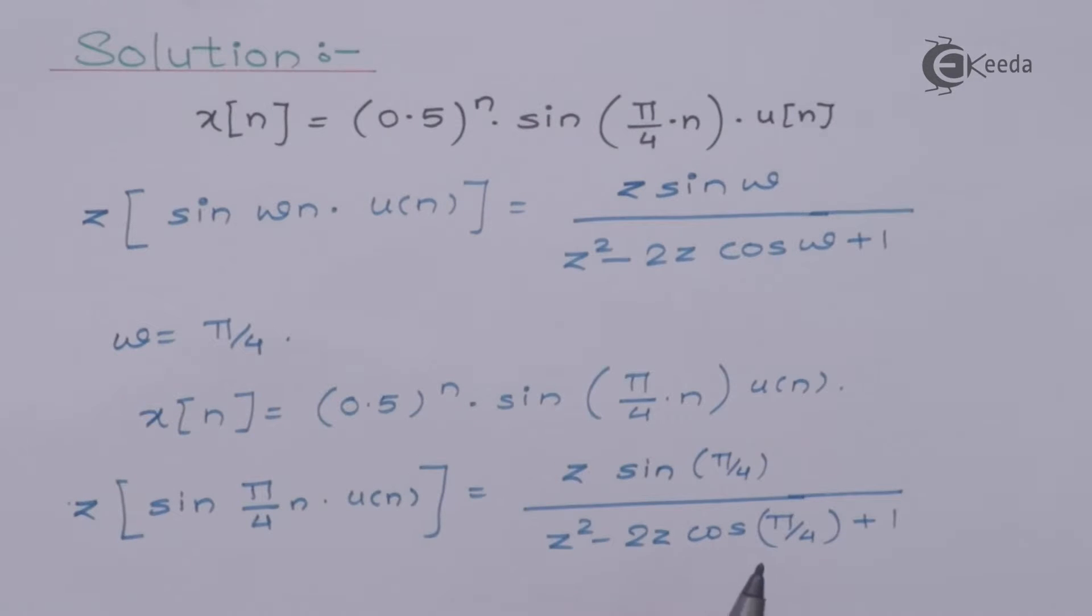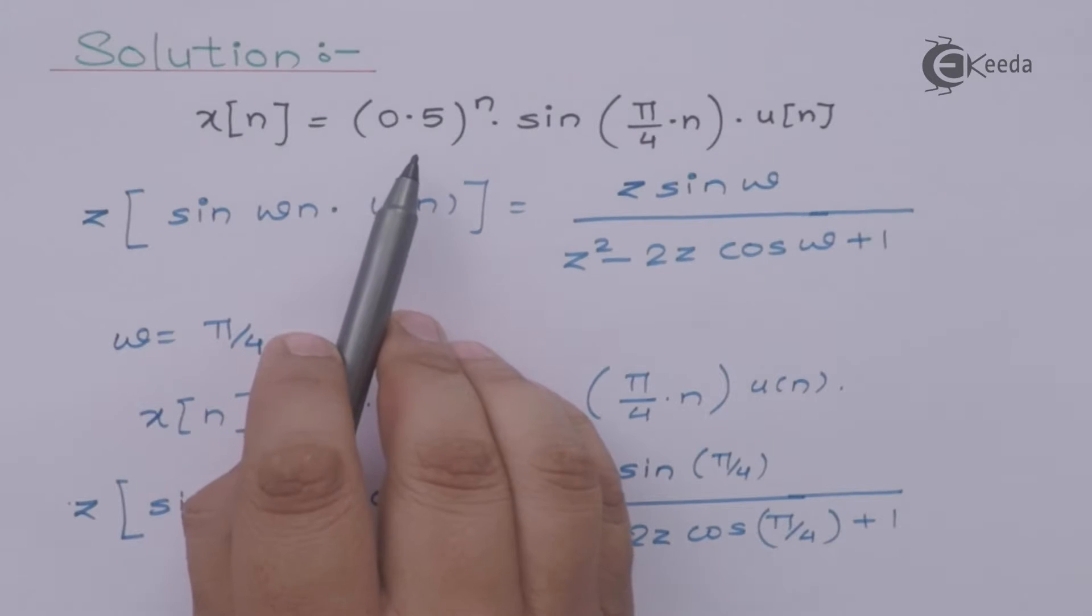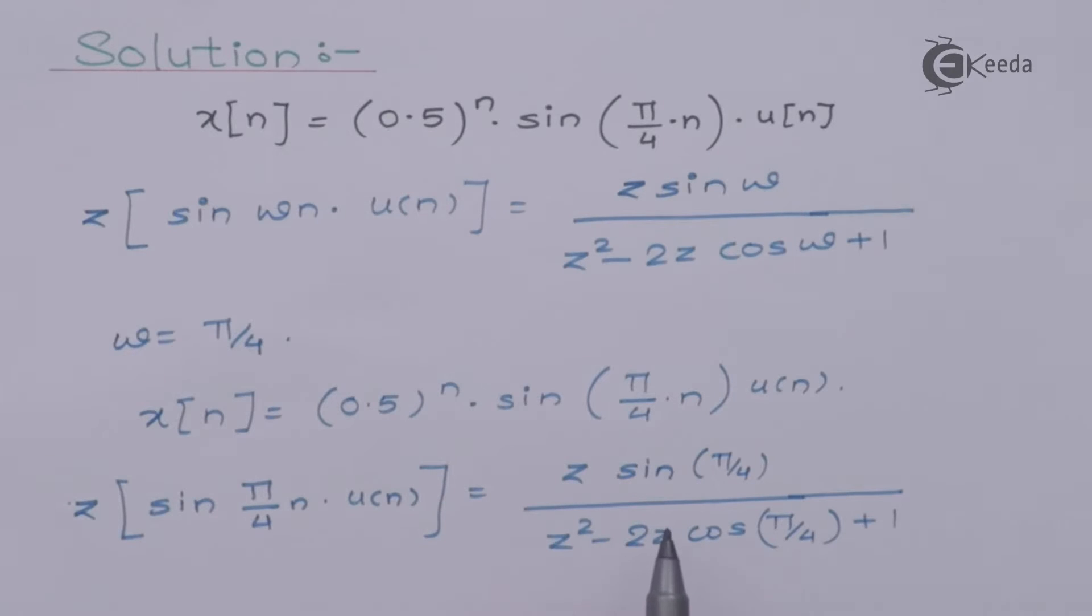Now what is our next step? I have substituted the value of π/4. Now you can apply sin(π/4) and cos(π/4) values here, but before that I'll use time scaling property because after time scaling property you can substitute sin(π/4) or cos(π/4) values.